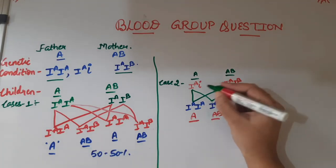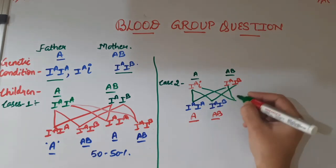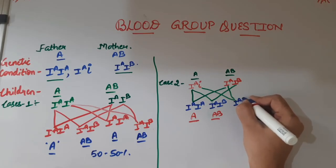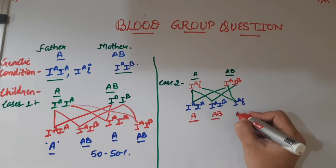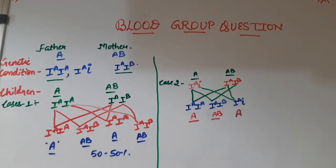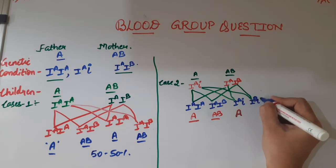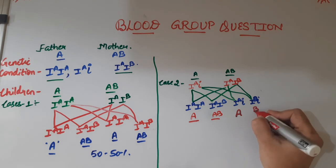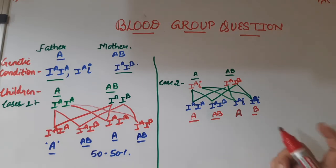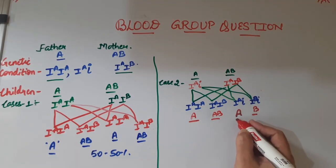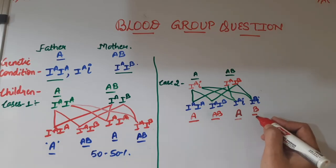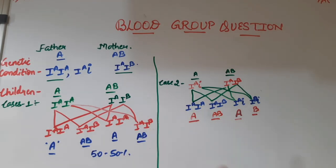In the third combination, if the father's small i allele fuses with the mother's Iᴬ, the combination is Iᴬi, which still expresses blood group A since Iᴬ is the dominant allele. In the last combination, if the father's small i fuses with the mother's Iᴮ, the combination is Iᴮi, expressing blood group B. So the inference for Case 2: if father (heterozygous A) marries a woman with blood group AB, the children can have blood groups A, AB, and B.